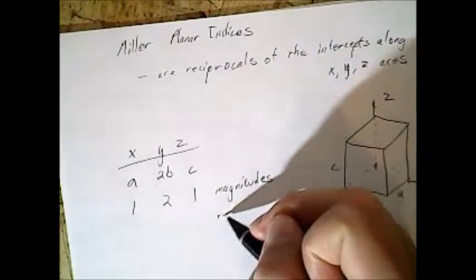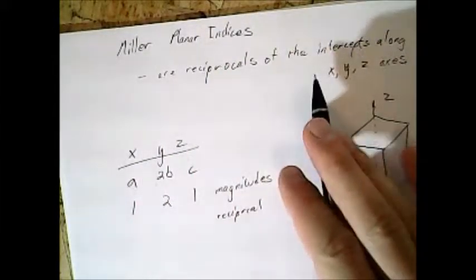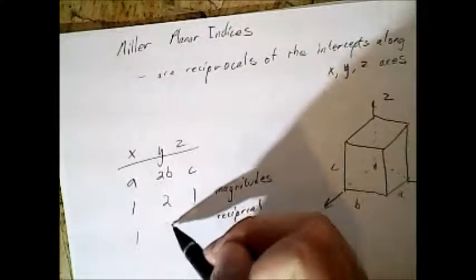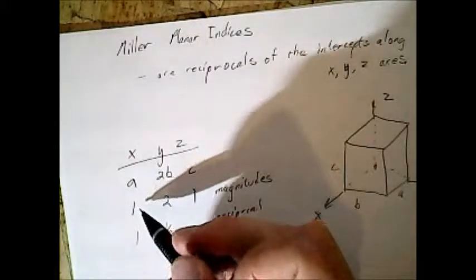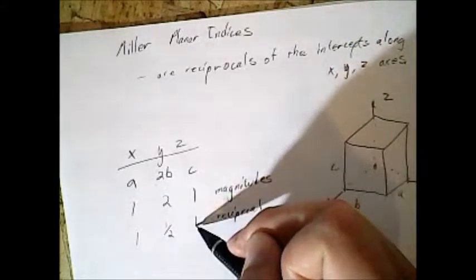From there, you want to take the reciprocal, since these are the reciprocal of the intercepts along the x, y, and z. So one, one-half, because the reciprocal of one is one over one, flip it, it's still one over one. One-half, and then one again.